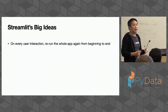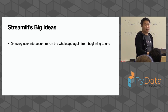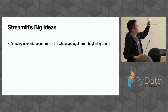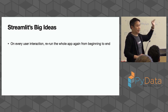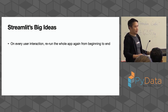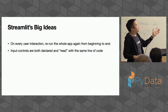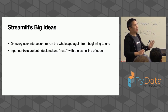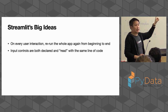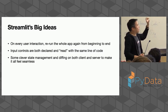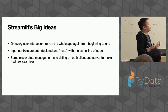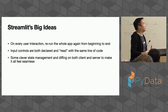How are they able to make their apps look so much like scripts? They had a couple of really big ideas. The biggest idea by far is this: on every user interaction, they run the entire app from beginning to end. If you move a slider, click a button, anything you do — beginning to end. And input controls are both declared and read with the same line of code. These two points are really big ideas and they go together; you can't really have one without the other. They also include a bunch of clever state management to make this feel seamless, like you're in a single-page app.